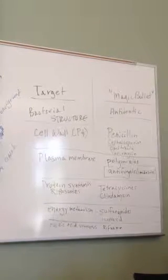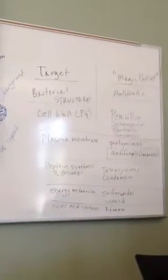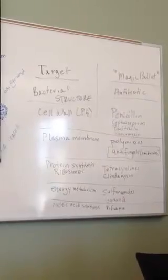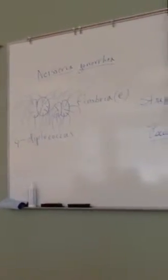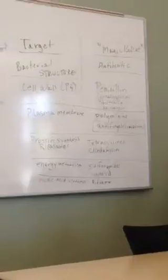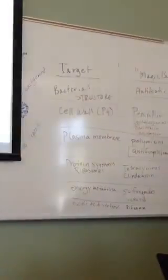Okay, so cell wall, plasma membrane, we did fimbria, flagella, capsule. We have to do pilus, plasmid, that we did nucleoid, ribosomes. Inclusion is extra stored nutrients.